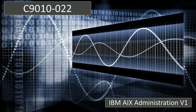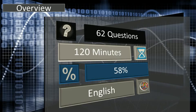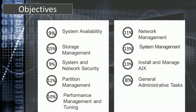Let's learn about C-9010-022 IBM AIX Administration V1 Certification Exam. There are 62 multiple choice questions in this exam, and the time duration to cover all these questions is 120 minutes. Passing score for this exam is 58%, and English is the given exam language. The C-9010-022 IBM AIX Administration V1 Exam has the following topics to learn.